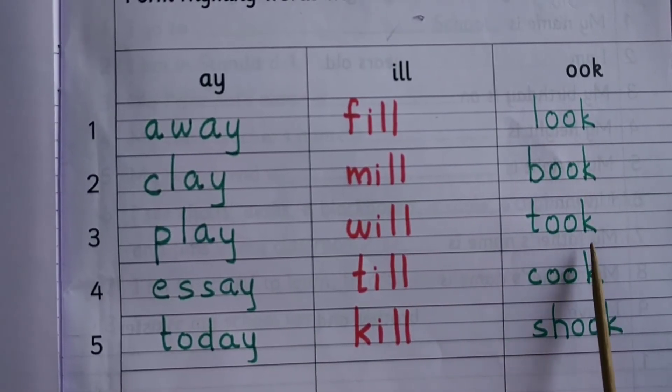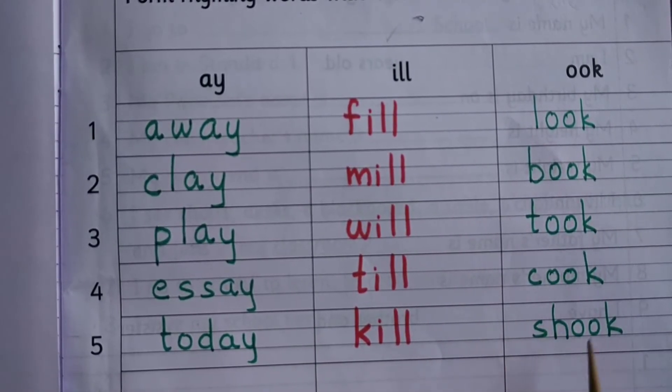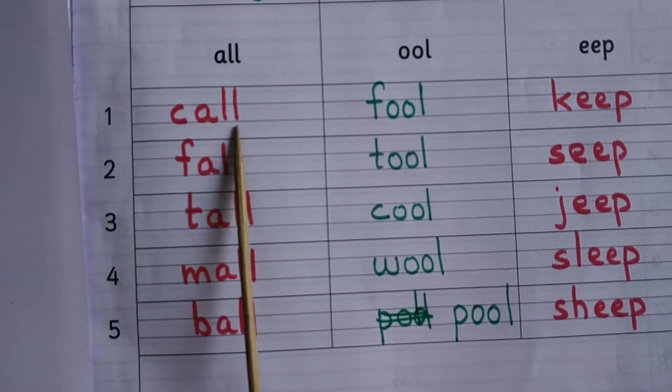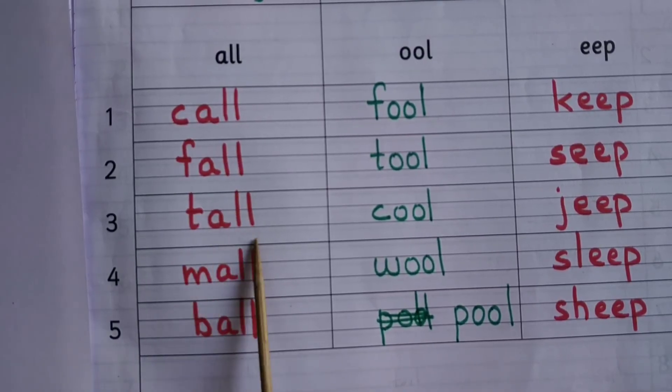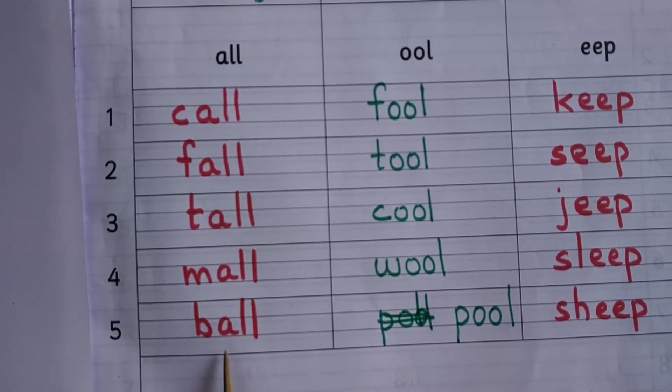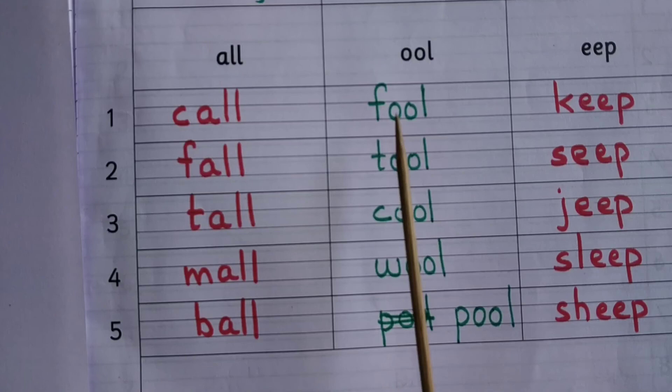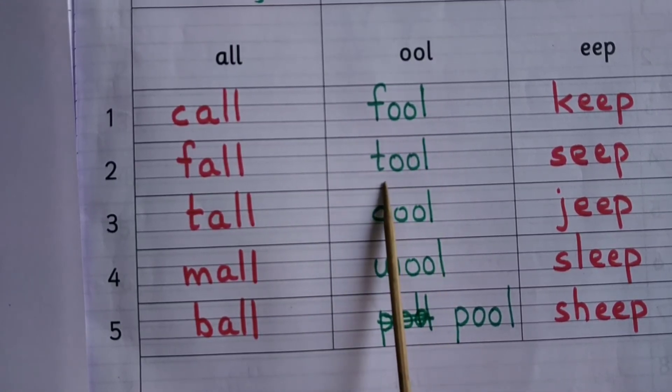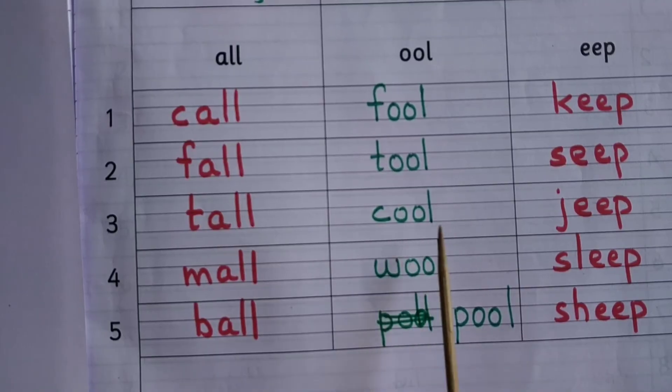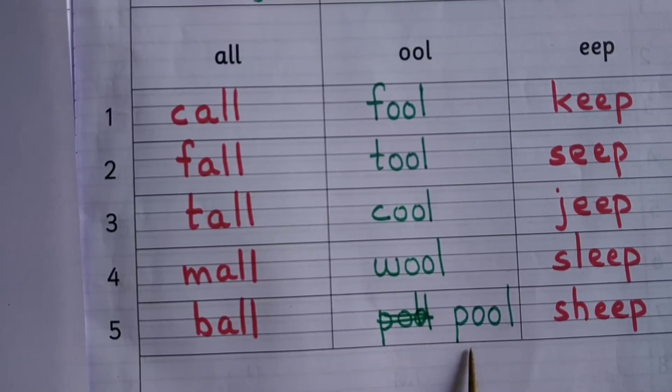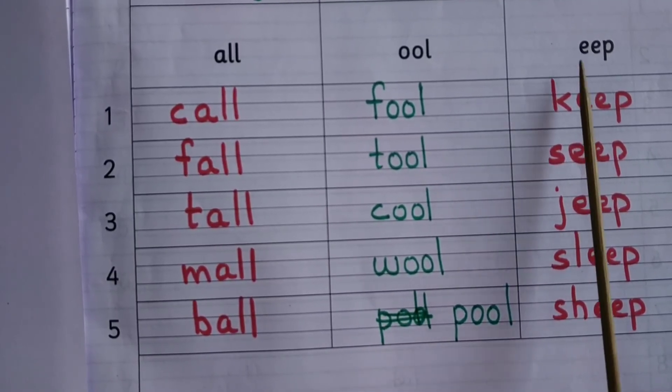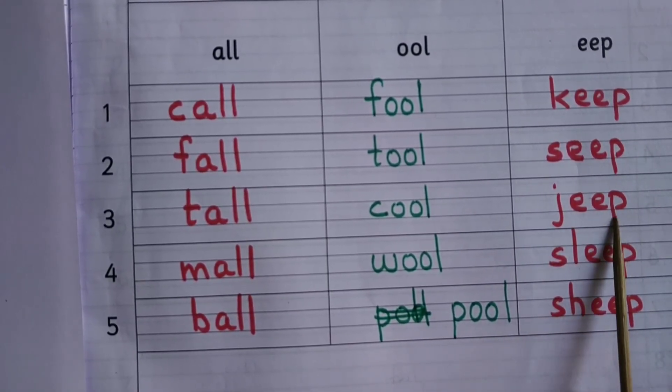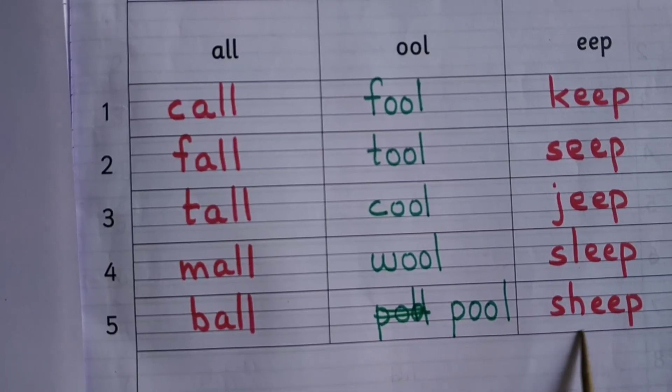Look, book, took, cook, shook. A-L-L: call, fall, tall, mall, ball. O-O-L: fool, tool, cool, wool, pool. E-E-P: keep, seep, jeep, sleep, sheep.